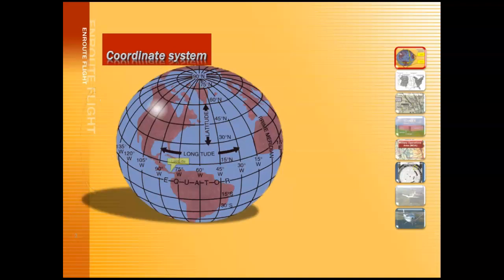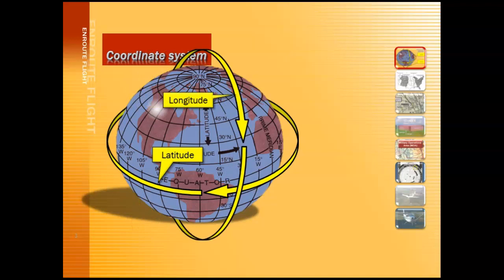The Earth is divided up into lines of latitude and lines of longitude. This system allows us to very accurately locate anything on the face of the globe. Lines of latitude start at the equator and then move north and south of the equator. They're approximately 69 miles wide, and they're divided up into degrees, minutes, and seconds.